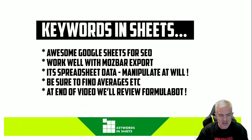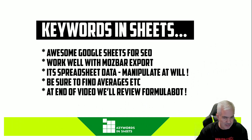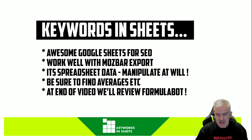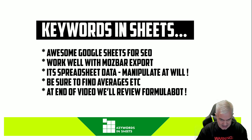Keywords and Sheets is an awesome collection of Google Sheets for SEO. They work well with MozBar Export — if you're not familiar with that, check out my old videos. It's spreadsheet data — manipulate at will, so make sure that you mess around with this data and utilize it the way that you work.